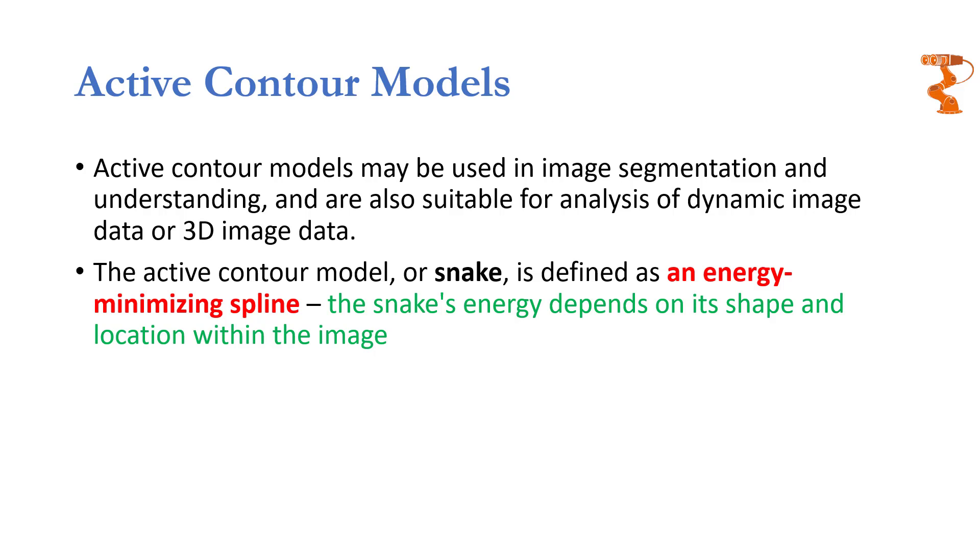Active contour models are also called snakes because they have a shape like a snake. Just like the snake moves and settles in the corner or at the edge of some wall, these active contour models will do something like that. So an active contour model is an energy minimizing spline. They are splines and they will have some energy and we are going to find a region, a place where their energy will be minimized. This energy is going to depend on multiple factors. For example, the shape of the snake and the location in the image where that snake is present.